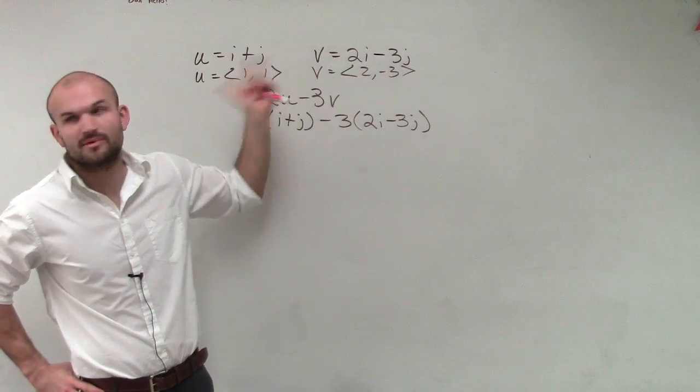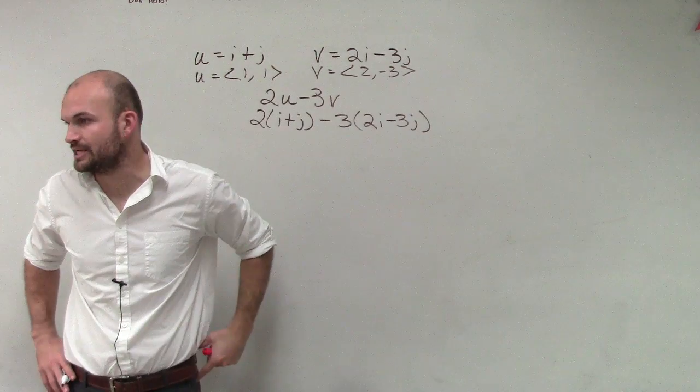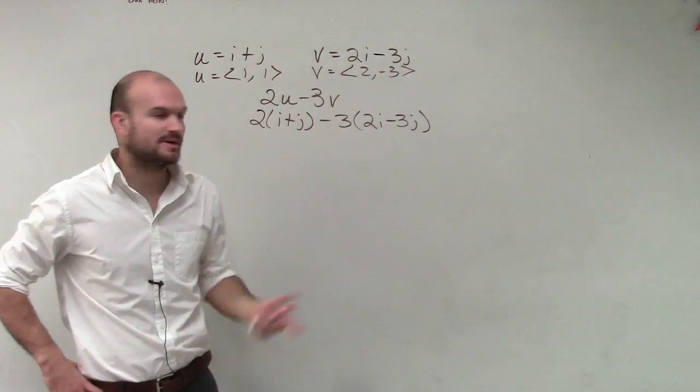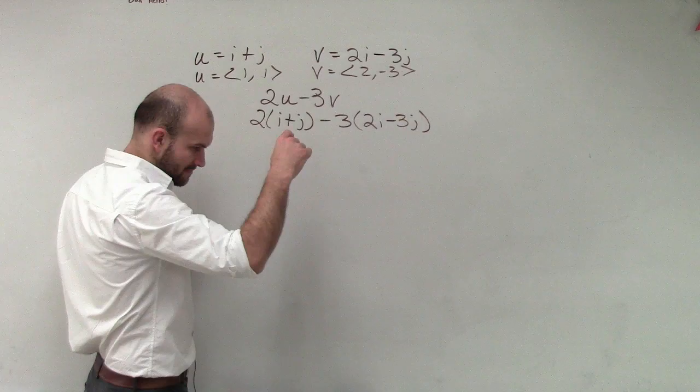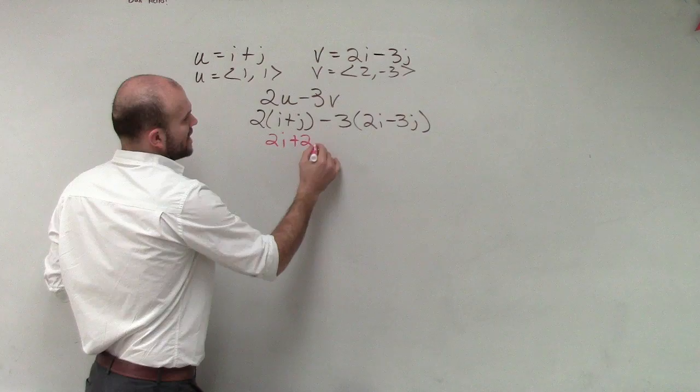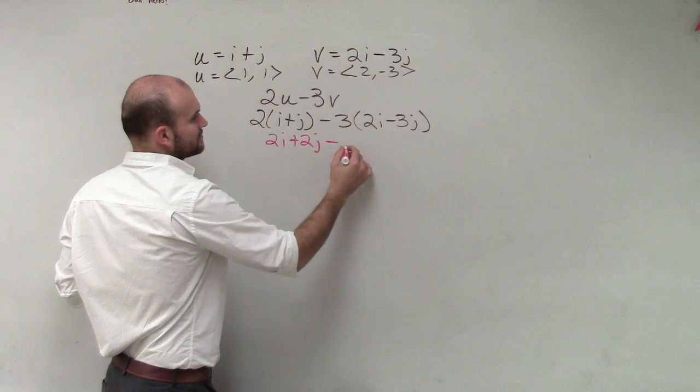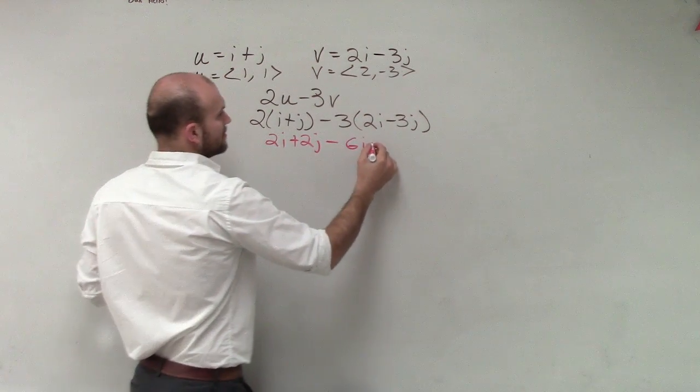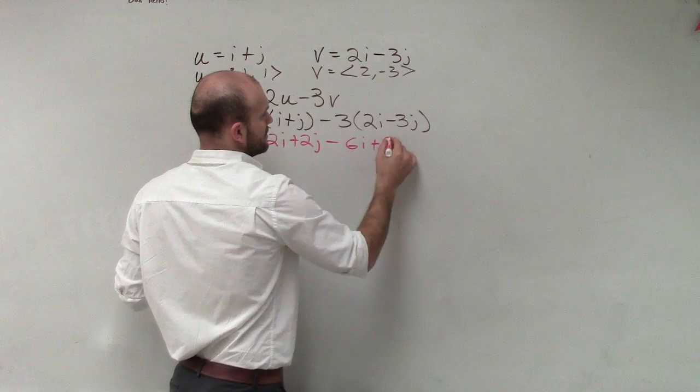You could also do it as the component form, but for right now I'm just going to leave it as our linear combination. So we could do it this way. Therefore, we now have 2i plus 2j minus 6i plus 9j.